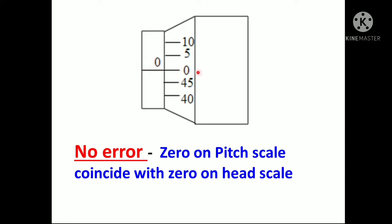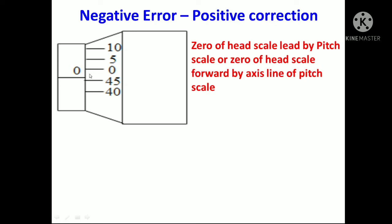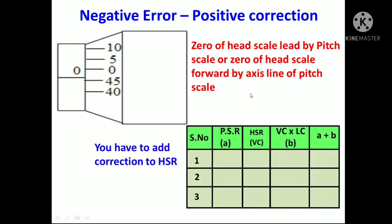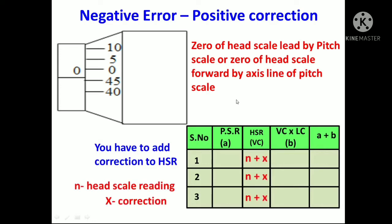But sometimes, when these two edges touch each other, the zero line does not exactly coincide with the zero of the pitch scale — that means exactly on the axis of the pitch scale. Sometimes the zero line on the head scale leads 2 to 3 lines beyond the axis line of the pitch scale. This type of error is called negative error. After taking the measurement, you have to add these 2 to 3 lines to your head scale reading.